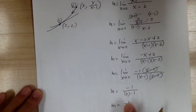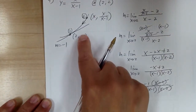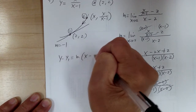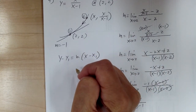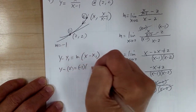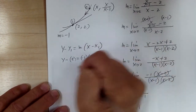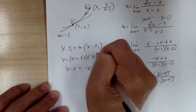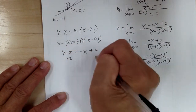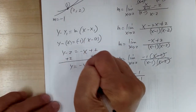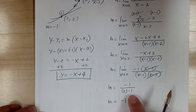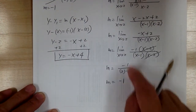Once you find the slope, come back and use the point-slope form: y minus y1 equals m times x minus x1. So you get y minus 2 equals negative 1 times x minus 2. That gives y minus 2 equals negative x plus 2. Put it in slope-intercept form — you get y equal to negative x plus 4. Apply the limits to find your slope, then from there it's regular algebra.